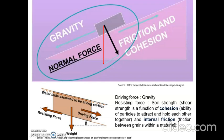The resisting force, which acts upward against gravity, is due to the soil strength. This soil strength is a function of cohesion and friction. Cohesion is the ability of the particles to attract and hold each other together. Due to cohesion, soil particles will remain stable at certain slope angles. Inter-grain friction between the grains within the soil mass also helps to hold the particles together. When cohesion and friction are greater, the resistance offered to the driving force is more.